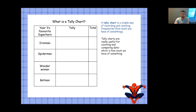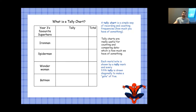Tally charts are really useful for counting and comparing data, and data is simply just how much we have of something. Each mark or vote is shown by a tally mark or tally point, and every fifth tally point is drawn diagonally to make a gate of five. I've made a tally chart here of Year 3's favourite superheroes.